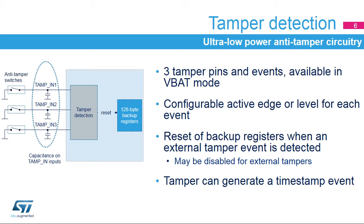A tamper event can generate a timestamp event, which can be used to record the date of the intrusion attempt. The capacitors shown in the figure perform filtering. If no external capacitors are explicitly connected to a tamper input, they provide a model of the trace capacity. Note that an external pull-up is required in edge detection mode. In level detection mode, the internal pull-up is used as explained in the next slides.